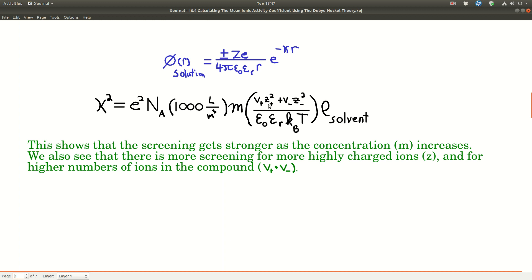These terms we saw before: nu+ is the number of cations, z+ is the charge on the cations squared, nu- number of anions, z- charge on the anions squared, permittivity of free space, dielectric constant, Boltzmann's constant, and temperature. And this rho is the density of the solvent. So kappa is basically the square root of this.